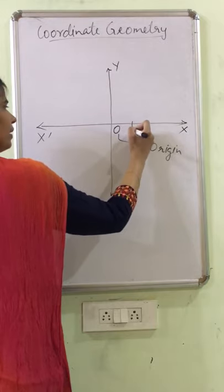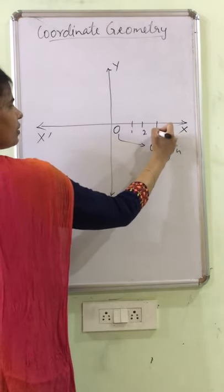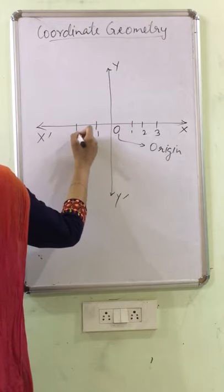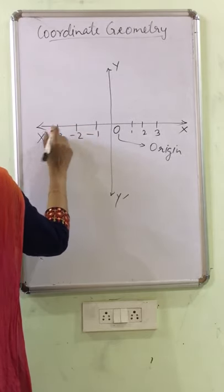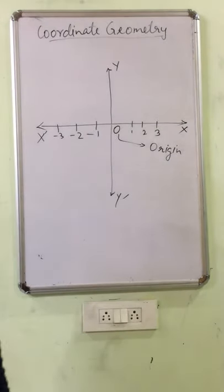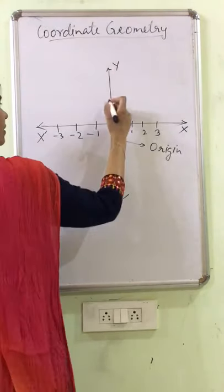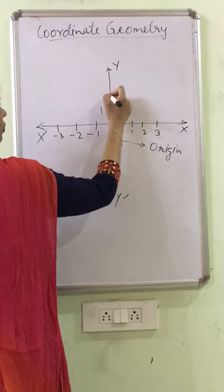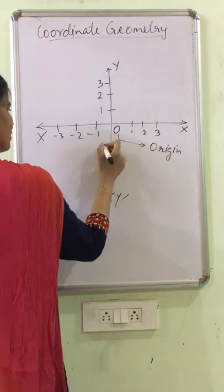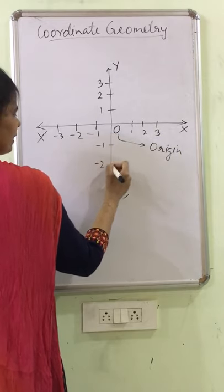And on right-hand side, it is always positive numbers. On left-hand side, it is negative. Because even in number line, left-hand side is always negative. Y-axis, just above, you have to plot positive numbers. And below x-axis, it is always negative.